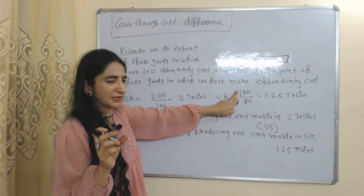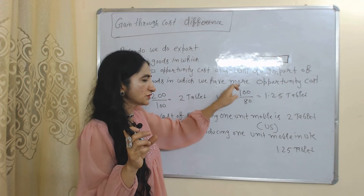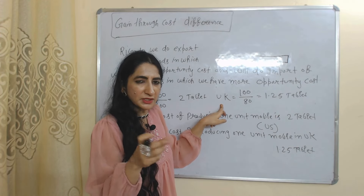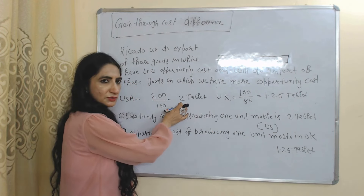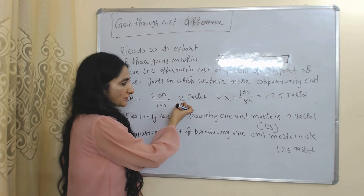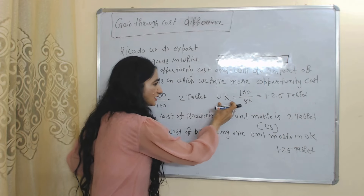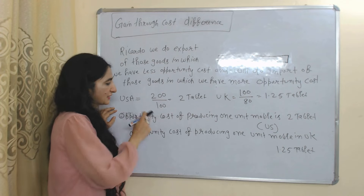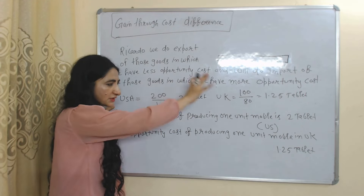In UK, either 100 units of tablet or 80 units of mobile can be produced — 100 divided by 80 equals 1.25 — so in UK, the opportunity cost of producing one unit of mobile is a loss of 1.25 tablets. UK has less opportunity cost (1.25) compared to USA (2.0), so UK will increase the production and export of mobile. USA has more opportunity cost in production of mobile, so USA will stop producing mobile and will start importing mobile from UK. Because of these cost differences, if both countries trade, both will be benefited.